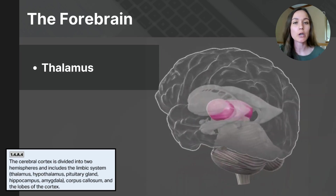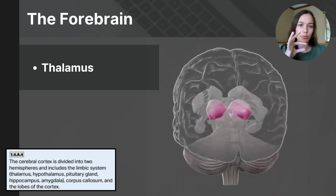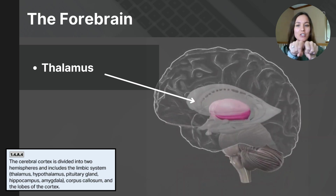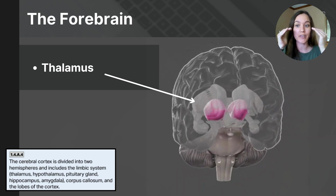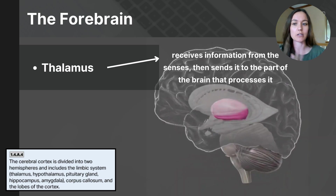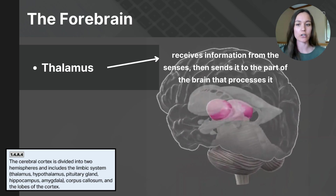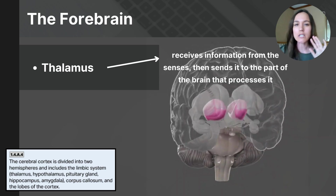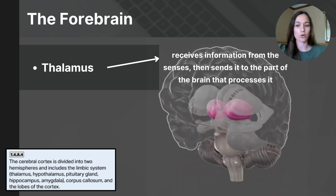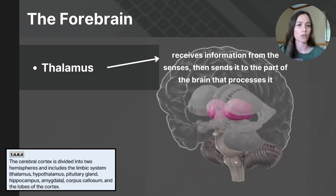Now we move into the forebrain — we'll skip the midbrain as there's no specific structure there you need to know. The thalamus is a set of egg-shaped structures located deep within the brain, sitting at the center just above the brain stem. The thalamus acts like a relay system — it takes sensory information from your sensory organs and sends it to the appropriate areas of the brain for interpretation. For example, when you see, hear, or touch something, the sensory information goes first to the thalamus, which directs it to the correct brain area to be understood. The thalamus also regulates sleep, alertness, and consciousness.